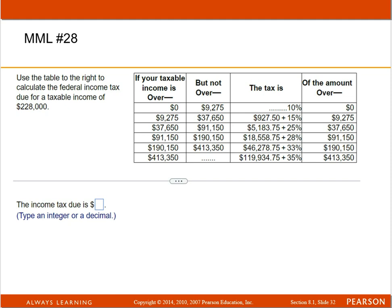Okay, this is one of the tax table problems and the income that we're taxing is $228,000. So you have to find where that would be in this table, and $228,000 is if your taxable income is over $190,150 but not over $413,350. In between these two numbers is where you'd find $228,000.